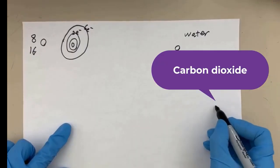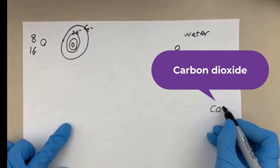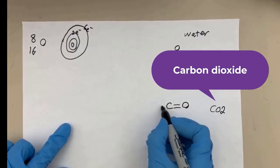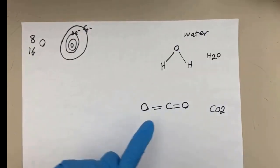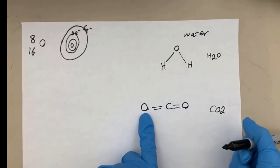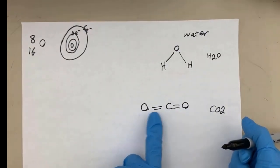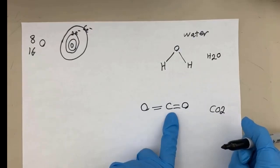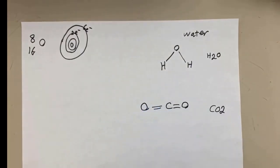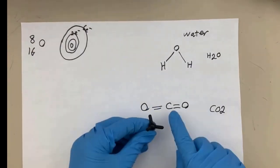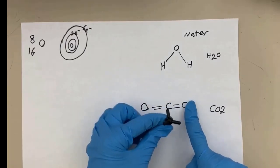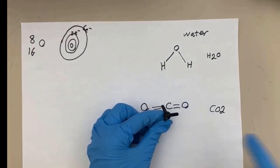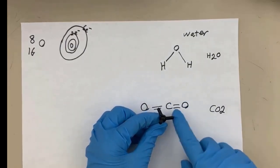For carbon dioxide, this is the structural formula. As you can see, there is a double covalent bond between carbon and oxygen. We have the carbon block and we are going to make a double bond with the oxygen atoms.